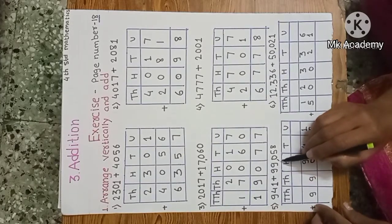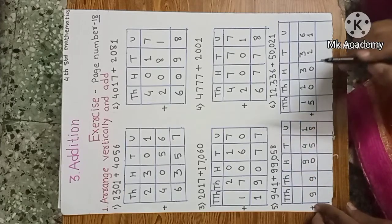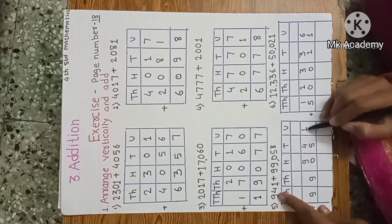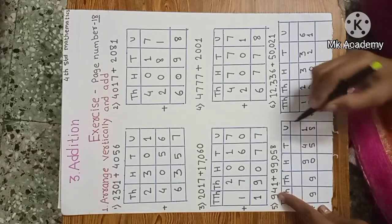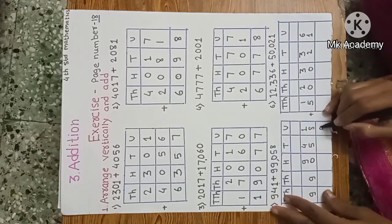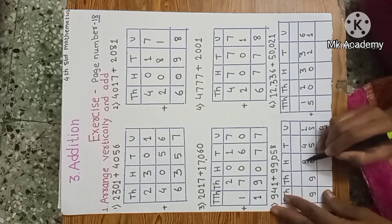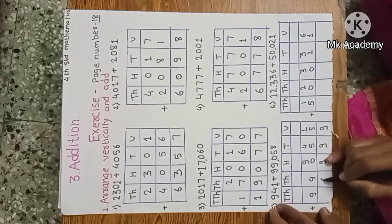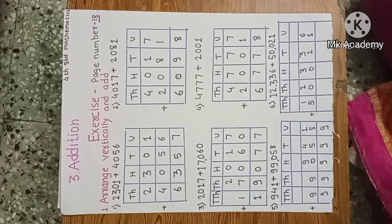Next example: 941 plus 99,058. This is a 3-digit number and 99,058 is a 5-digit number. We write down 941 and 99,058 in vertical arrangement. Start from unit place: 1 plus 8 is 9; tens: 4 plus 5 is 9; hundreds: 9 plus 0 is 9; thousands: 0 plus 9 is 9; ten-thousands: 9. The answer is 99,999.